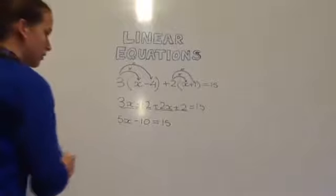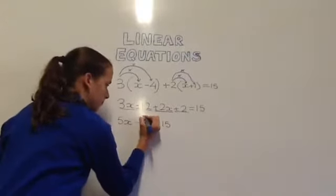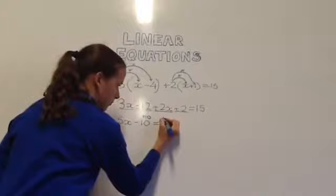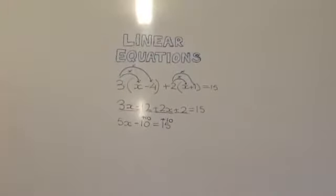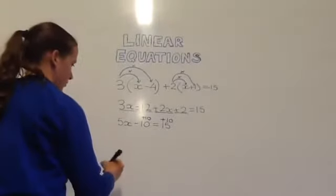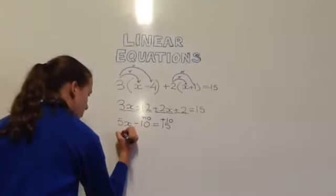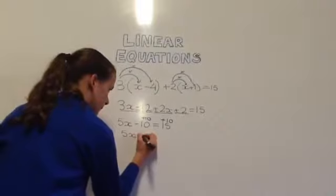Next to get rid of the negative 10 you have to add 10 to both sides. This leaves you with 5x equals 25.